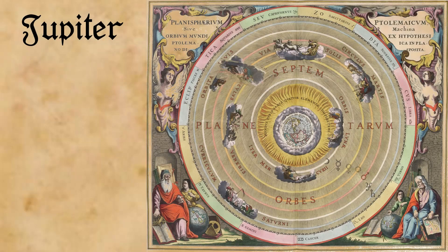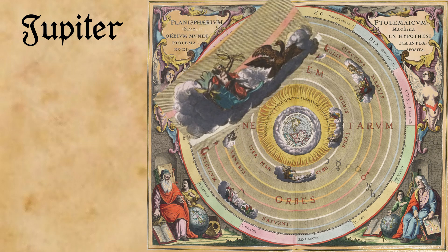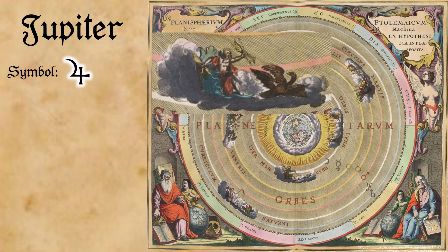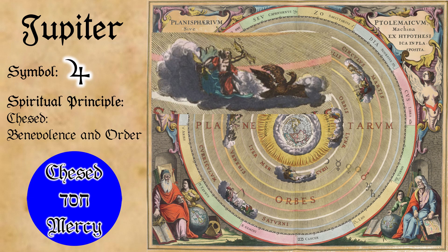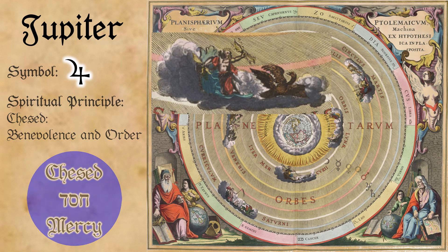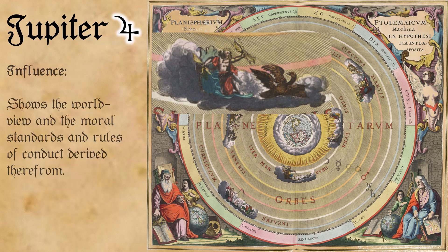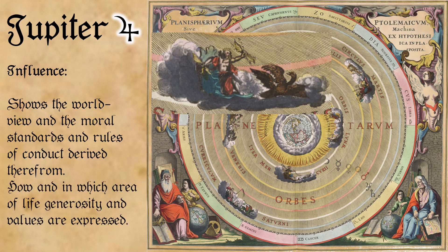Let us now sum up the meanings of Jupiter. The Symbol. The spiritual principle behind Jupiter is Chesed, which stands for Benevolence and Order. Influence. Jupiter's position shows the world view and the moral standards and rules of conduct derived therefrom. Jupiter also shows us how and in which area of life generosity and values are expressed.